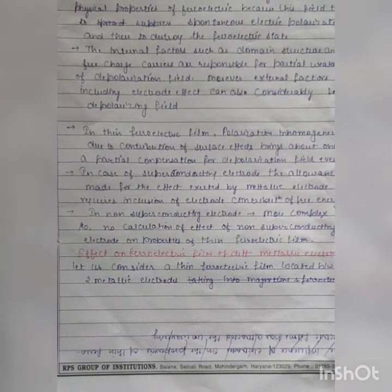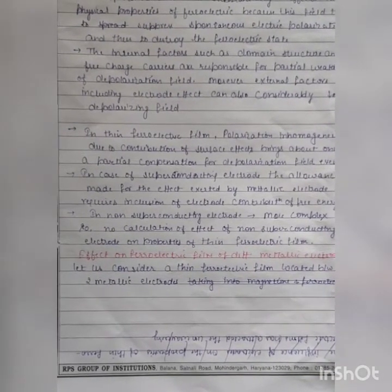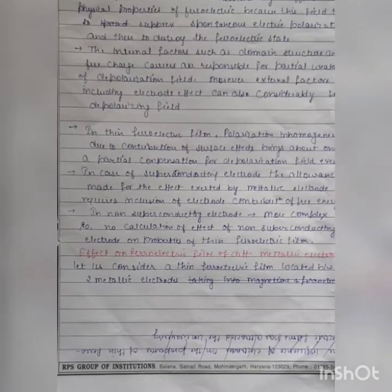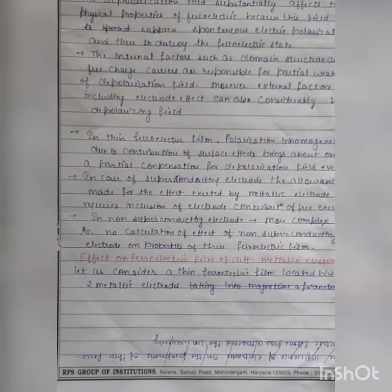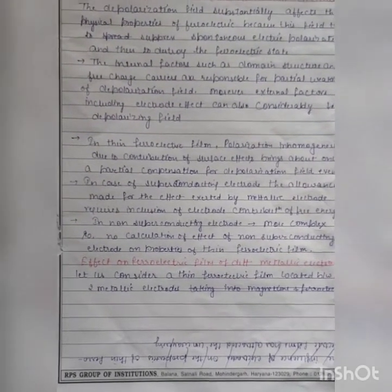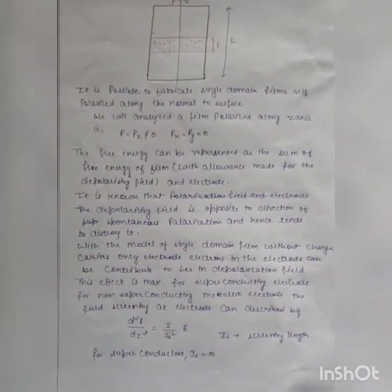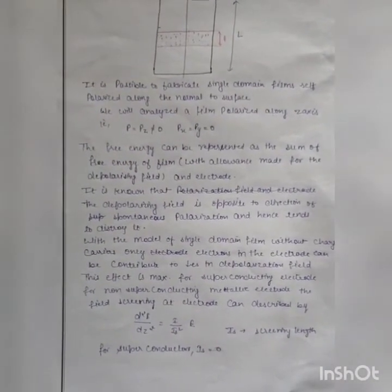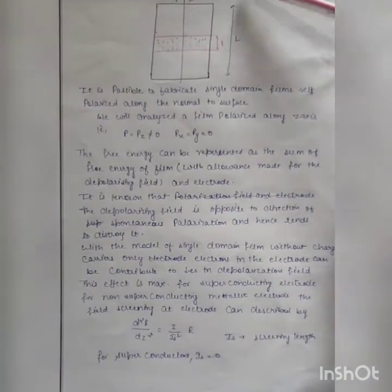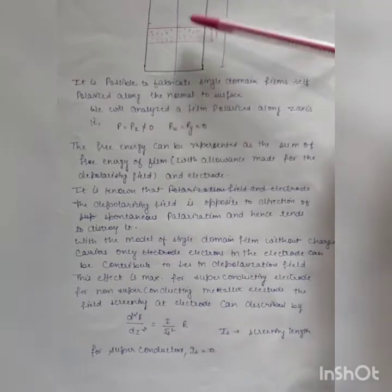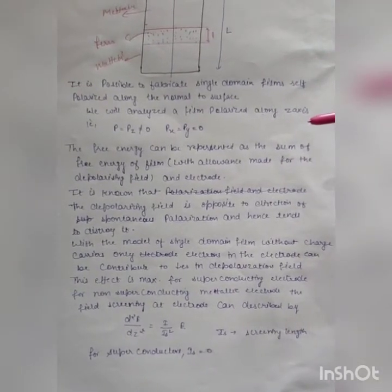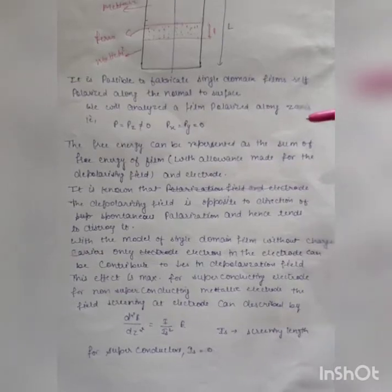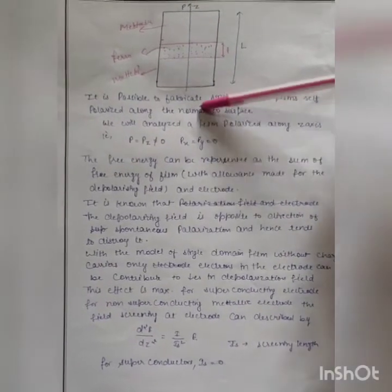We cannot easily calculate the effect of non-superconducting electrodes on the properties of thin ferroelectric films. We will now discuss the effect on ferroelectric films of different metallic electrodes. For this, let us consider a thin ferroelectric film located between two metallic electrodes. It is possible to fabricate single-domain films self-polarized along the normal to the surface, so we can analyze the film polarization along only the z-axis.